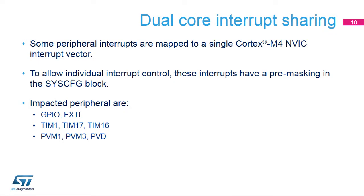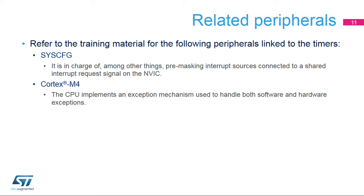In the dual-core STM32WB MCU, which embeds a Cortex-M4 application core and a Cortex-M0-plus radio core, the peripheral interrupts are connected to both cores. To prevent unwanted interruptions, the interrupts mapped on the Cortex-M4 Nested Vector Interrupt Controller and having multiple peripheral interrupt sources can be preliminarily masked in the System Configuration Controller, or SYSCFG. The SYSCFG interrupt mask registers ensure that only the wanted interrupt sources are forwarded to the Cortex-M4 Nested Vector Interrupt Controller. The peripherals impacted are listed. The Nested Vector Interrupt Controller is linked with the SYSCFG module and the Cortex-M4 CPU.